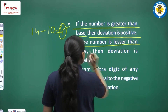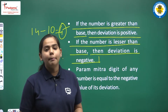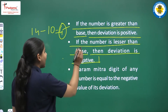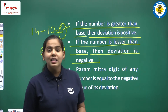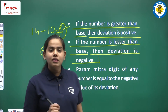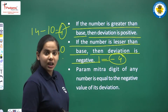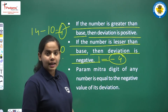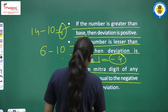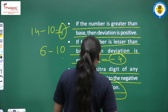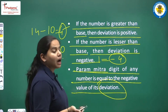When is the deviation negative? If the number is smaller than the base. For example, base is 10 and number is 6; when we subtract 10, we get minus 4. So minus 4 is a negative deviation. Also, Paramitra digit of any number is equal to the negative value of its deviation.